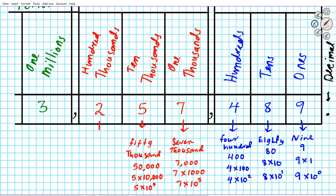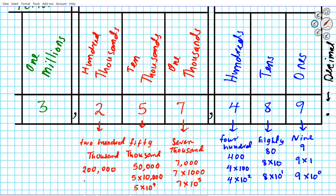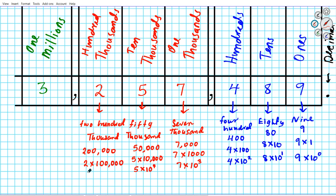Moving to the hundred thousands place — we have a two there. This number is two hundred thousand. In numerical form it's two hundred thousand. In expanded form without exponents it's two times one hundred thousand. In exponent form it's two times ten to the fifth power.